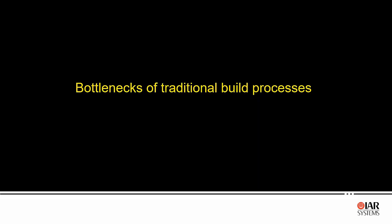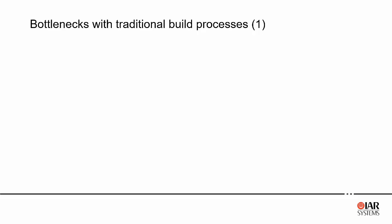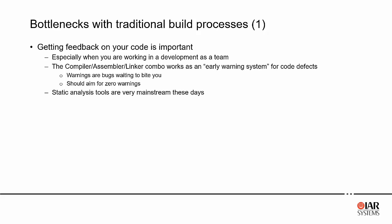Let's start with the bottlenecks. There are several bottlenecks involved when you are using the traditional build processes, especially when you have a huge development team with many people working on different components on different release cycles. Things can get really messy, and getting feedback on your code in that scenario is vital. The compiler, assembler, linker, and build tools can give you an early warning system of rules that you might be breaking when writing your code. The bigger the project, the higher the chances there are bugs in the code.